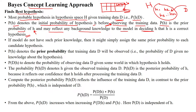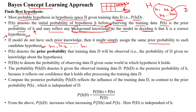This prior probability will be used to calculate the posterior probability. Any background knowledge will be reflected on the model to calculate the posterior probability, which is the correct hypothesis. If the model does not have such prior knowledge, then it might simply assign the same prior probability to each candidate hypothesis — H1, H2, and so on up to Hn.